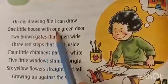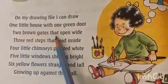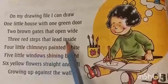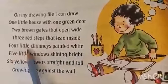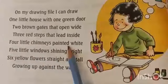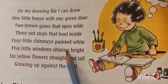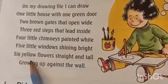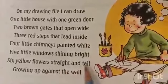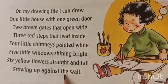On my drawing file, I can draw one little house with one green door, two brown gates that open wide, three red steps that lead inside, four little chimneys painted white, five little windows shining bright, six yellow flowers straight and tall growing up against the wall.